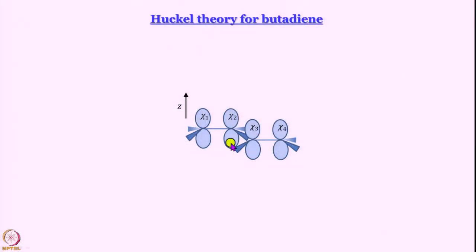Butadiene of course is a little more complicated than ethylene. You can think it is like two ethylene moieties that are joined together. So we will see how we get there and how we can build a Huckel theoretical description of a molecule like this.